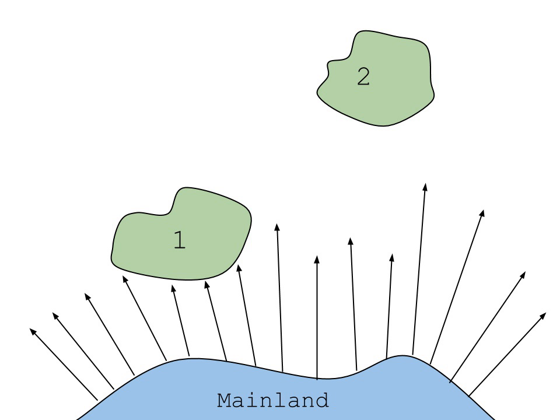The field was started in the 1960s by the ecologists Robert H. MacArthur and E. O. Wilson, who coined the term island biogeography in their theory, which attempted to predict the number of species that would exist on a newly created island.